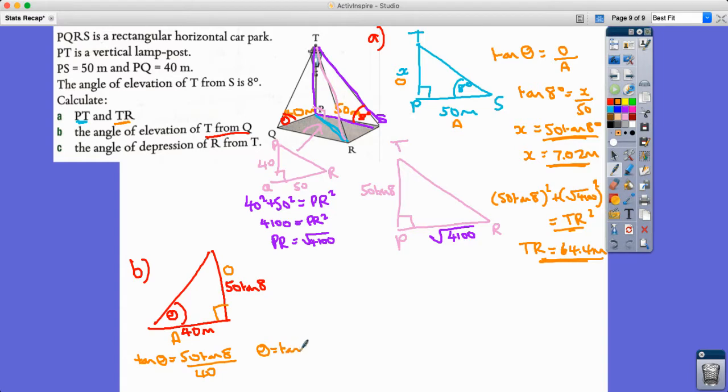This is the opposite, this is the adjacent, I'm going to be doing tan. So the tan of the angle is 50 tan 8 over 40, and so my angle is actually tan to the minus 1 of 50 tan 8 over 40, which comes out as 9.96 degrees.